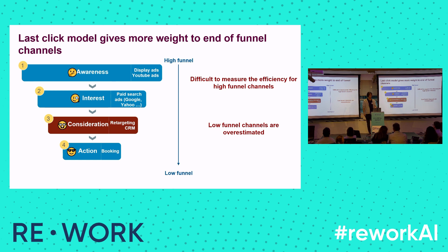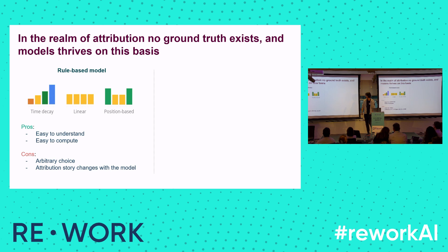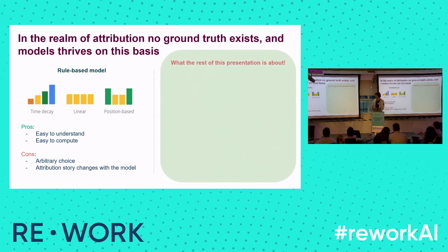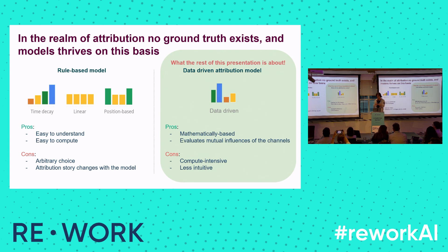At BlaBlaCar, we used the last-click attribution model, but there are many others — such as first-click or the linear model, which gives an equal proportion of the conversion to each channel. These are called rule-based models. The advantage is they are easy to understand and easy to compute, but the choices are arbitrary and depending on the model you use, the results are different. So what we wanted was a model based more on mathematics and statistics — a data-driven attribution model that can evaluate each channel's influence on conversion.